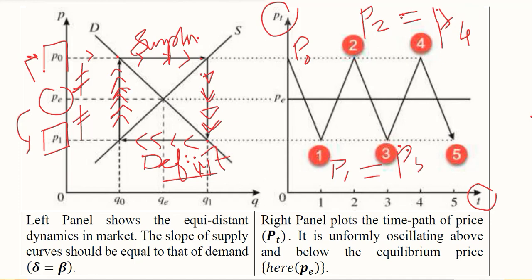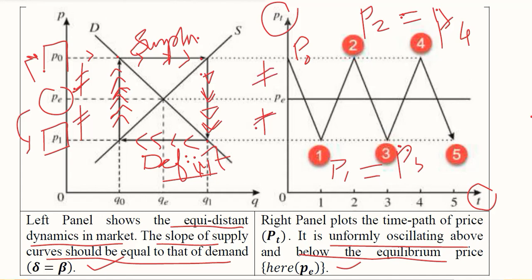This is how this oscillatory pattern would exist, which would be equidistant below and above the equilibrium. There is equidistant dynamics in the market, and the slope of supply curve should be equal to the slope of demand curve. It is uniform oscillation above and below equilibrium price.